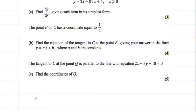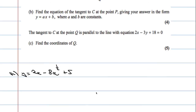I'm going to copy this down but simplify it. I'll write it as y equals 2x minus 8 times x to the power of a half plus 5. Now it's easier to differentiate, so dy by dx is going to equal 2 minus 4x to the negative a half.